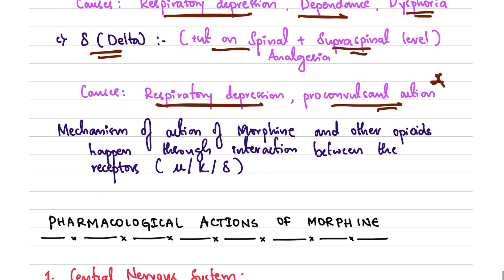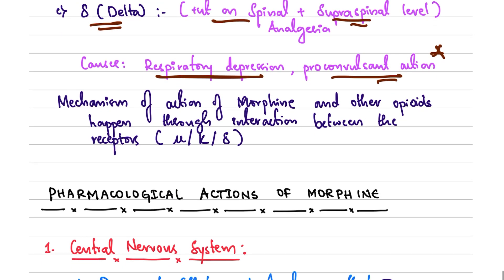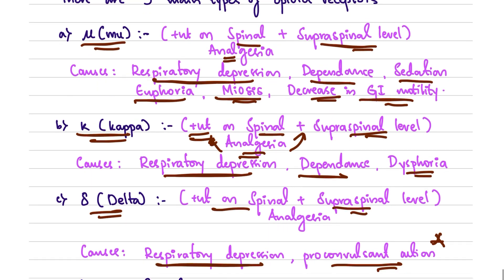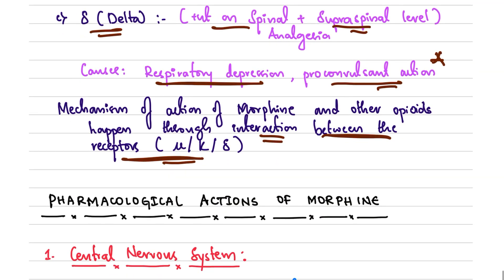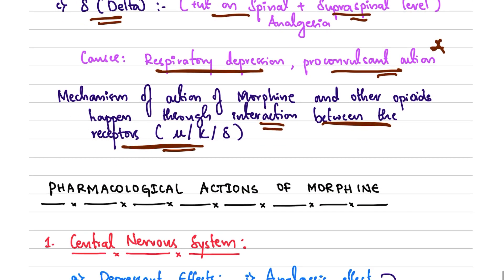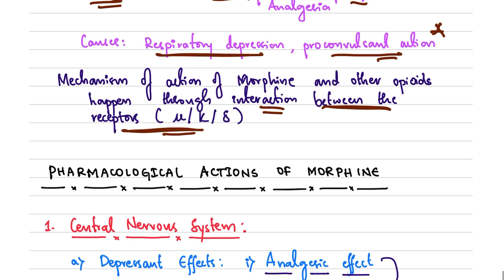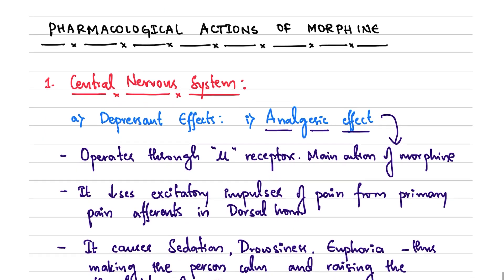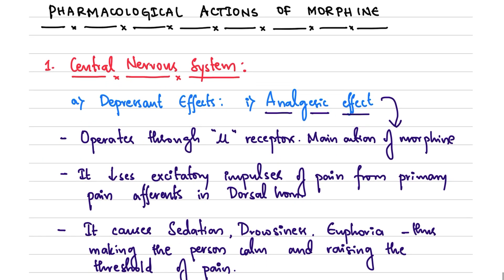So those are the three main opioid receptor types: mu, kappa, and delta. The mechanism of action of morphine and other opioids occurs through interaction with these mu, kappa, and delta receptors.